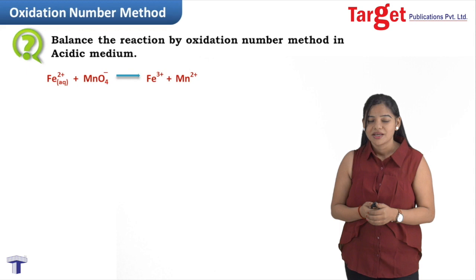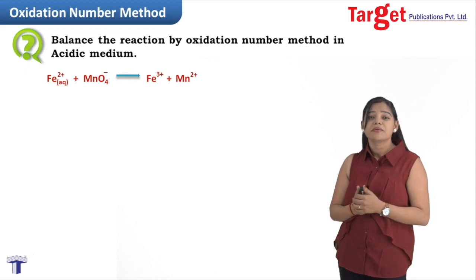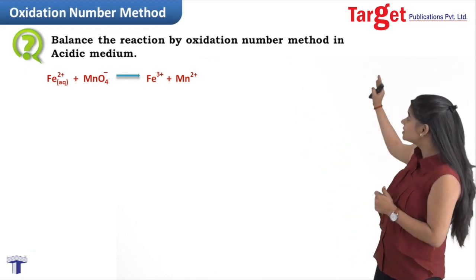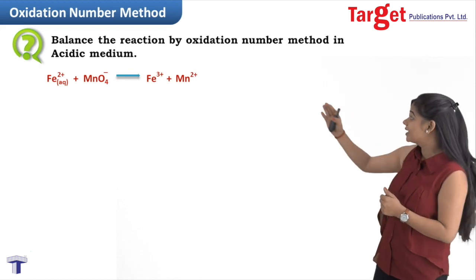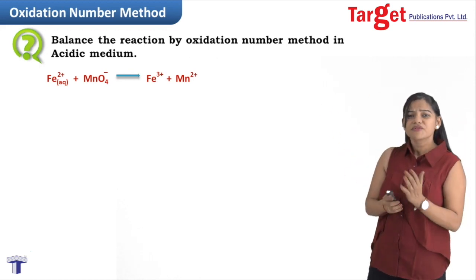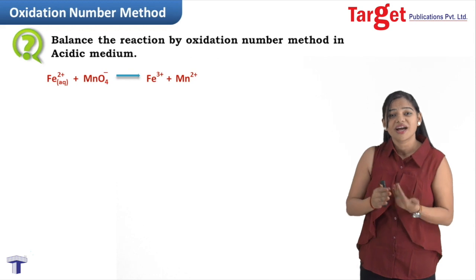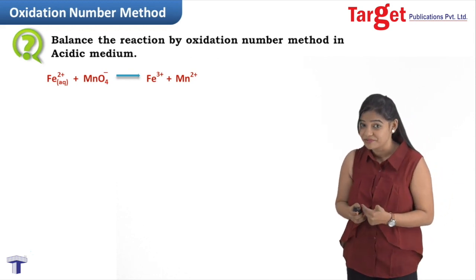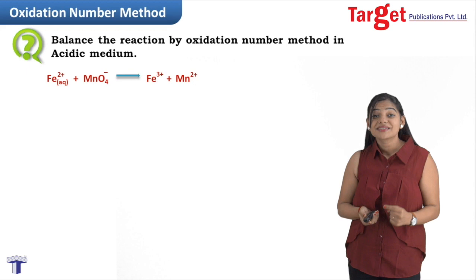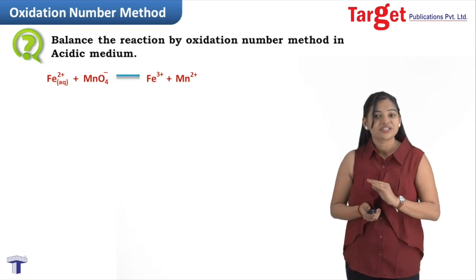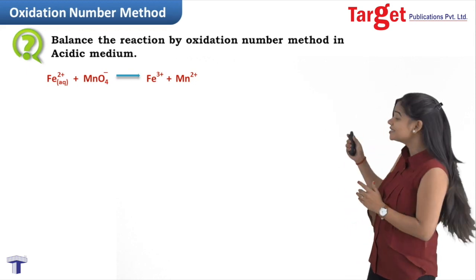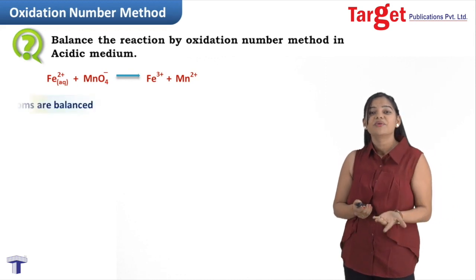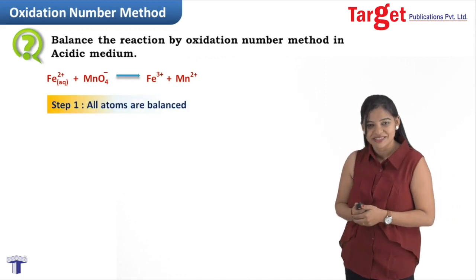What is our first step? Our very first step is to balance the atoms. Here, the atoms requiring balancing are iron and manganese. On both sides, the number of iron and manganese atoms are already the same. Remember, balancing of oxygen and hydrogen is not required at this step, so step one is ruled out.